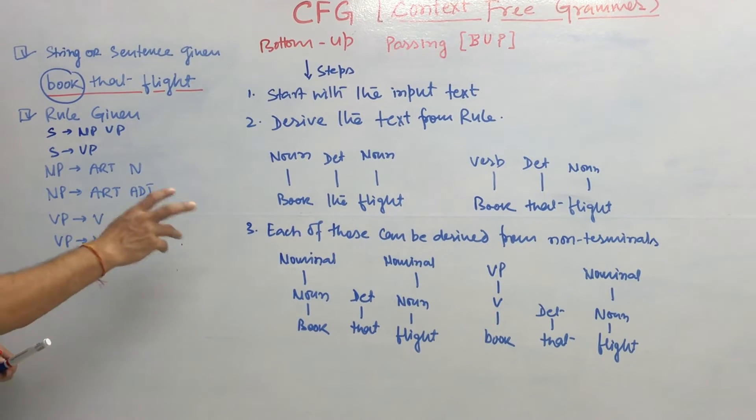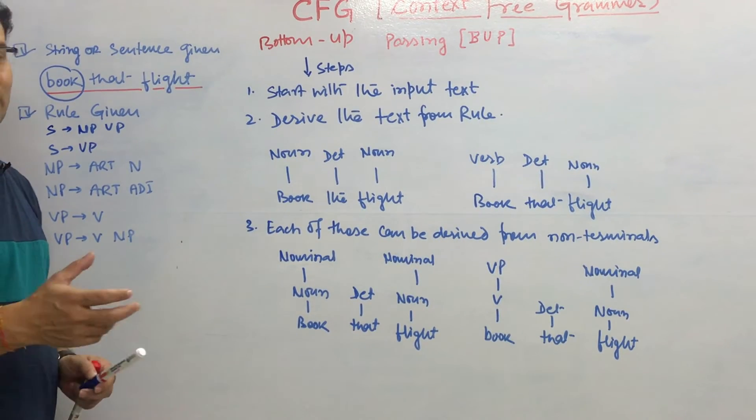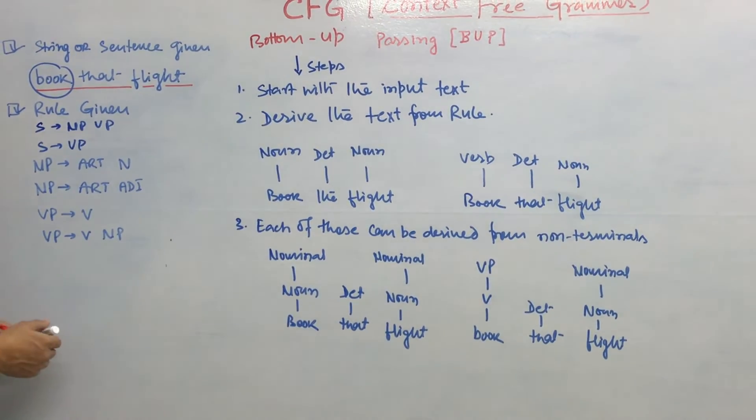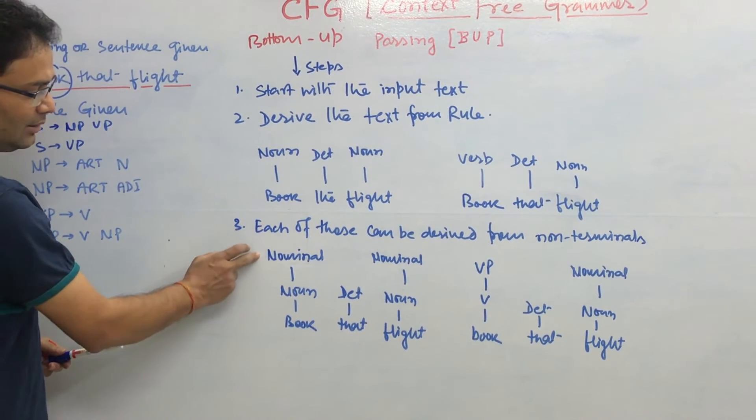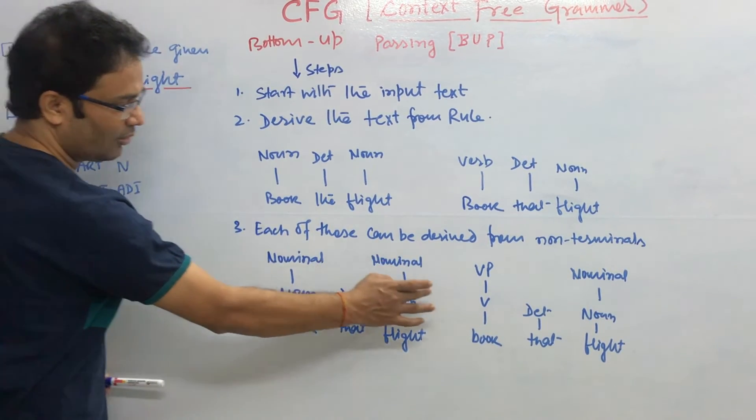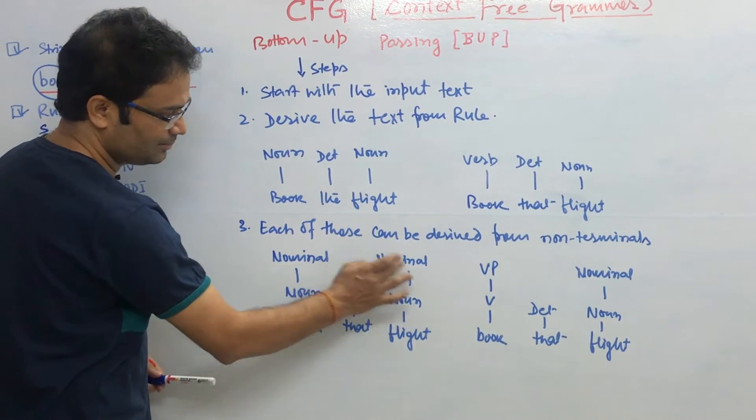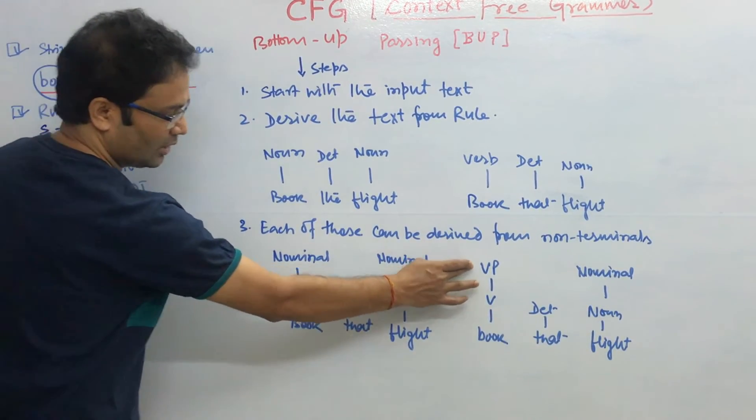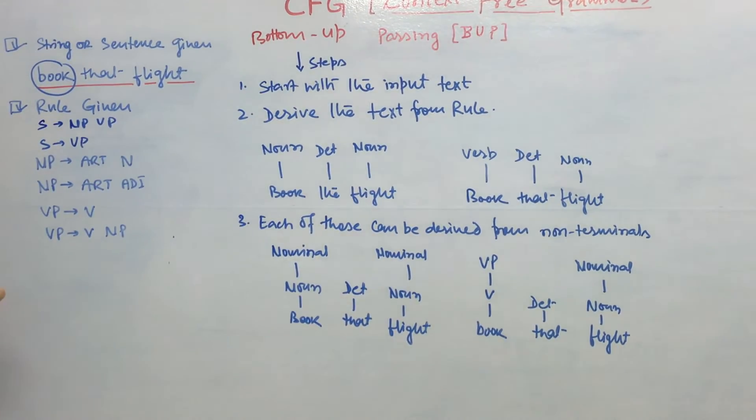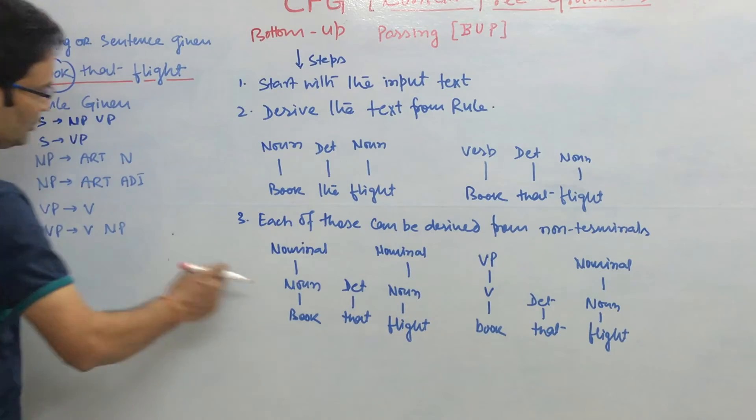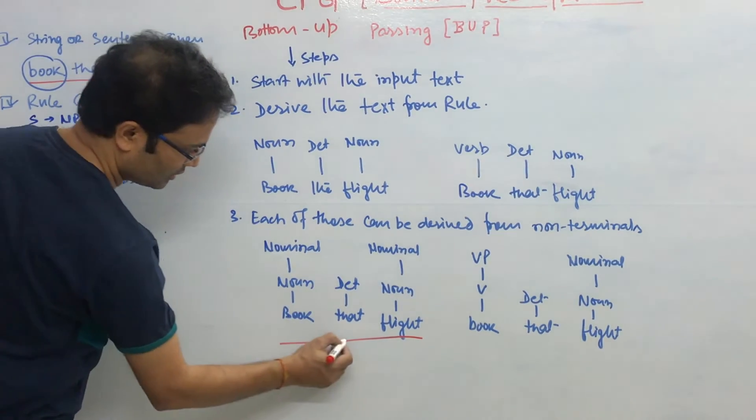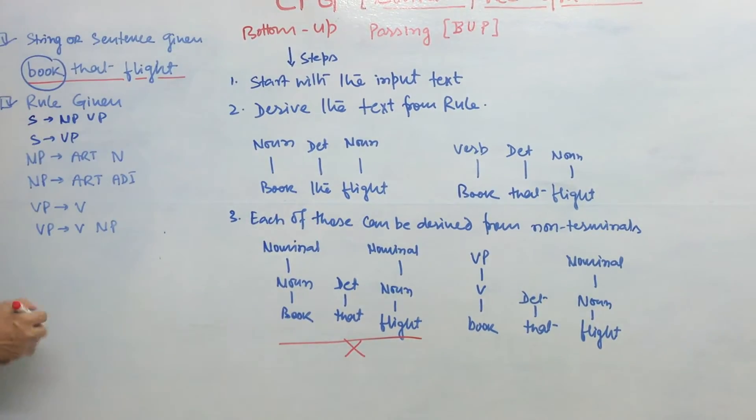We have to derive, we have to use the non-terminals also, as you have seen that rules. If you derive something bottom, that should come from the non-terminal. Let us take noun, for the noun, we can take the non-terminal nominal. For the noun also non-terminal, for the verb, for noun also nominal, for the verb we can take the verb phrase and the noun the nominal. But if you see, this noun, determiner noun, it does not follow any rules. On that basis, we can rule it out, that it is not possible.